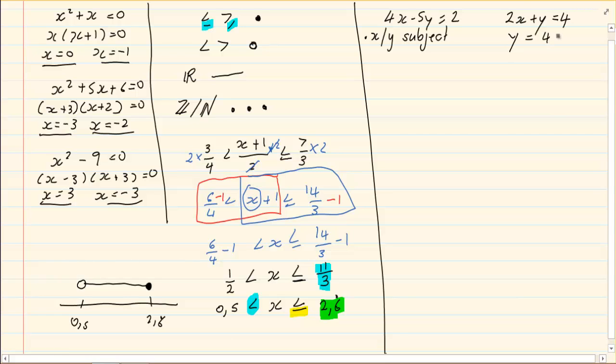If we make y the subject of the formula, we have y is equal to 4 minus 2x. Then we are going to substitute. So we are taking this 4 minus 2x and we are putting it in wherever there is a y in the second equation.